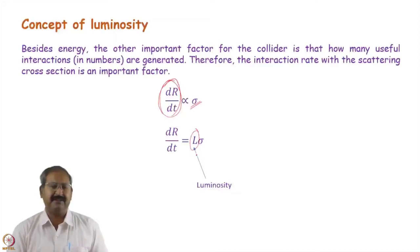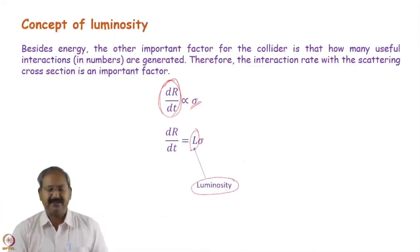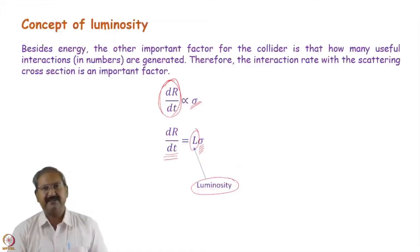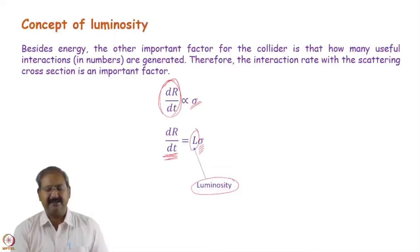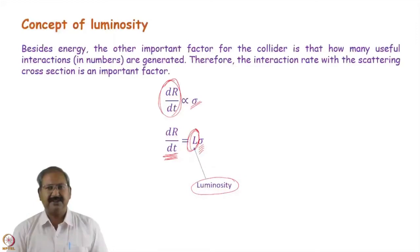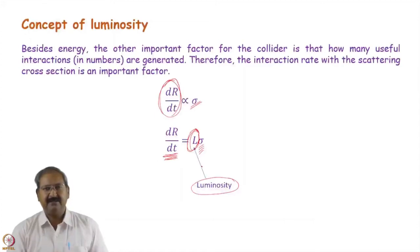The event rate per second for a particular type depends on the scattering cross section, and the proportionality constant L is known as luminosity in the case of colliders. Luminosity has to be increased so that even with a smaller cross section we get a sufficient rate of events. Detectors cannot detect events if they are very rare, so dR/dt has to be increased — luminosity must be increased, just as beam power must be increased for synchrotron radiation sources.